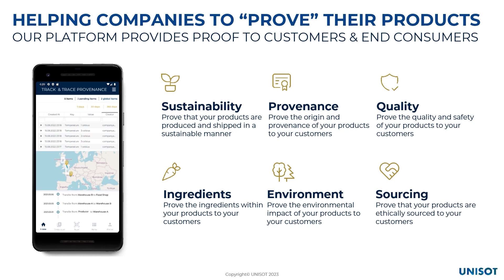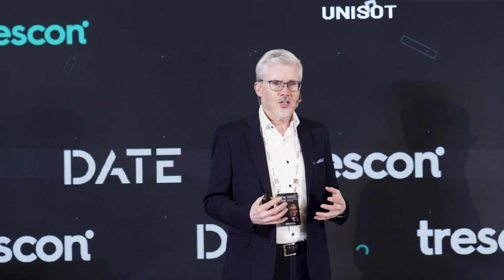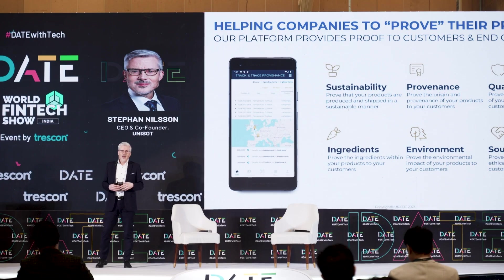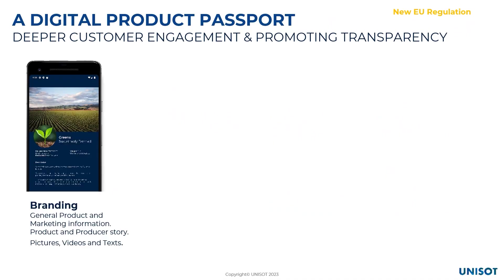In Europe, we have a lot of new regulation that forces us to do supply chain sustainability, supply chain traceability, and also digital product passports. Anyone planning to export to or do business with Europe has to follow these European laws as well. One product is the digital product passport: when a consumer or anyone in the supply chain scans a QR code or RFID on the product, they get up branding information.